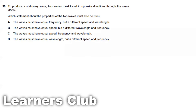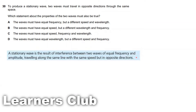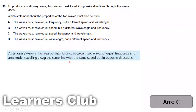A stationary wave is the result of interference between two waves of equal frequency, amplitude, traveling along the same line with the same speed, but in opposite directions. So the only difference is that they travel in opposite directions.